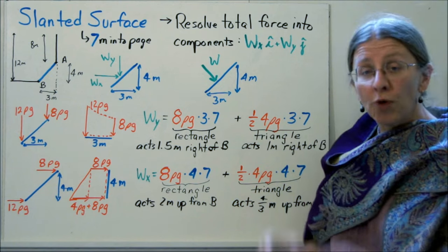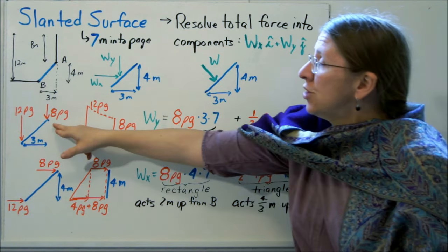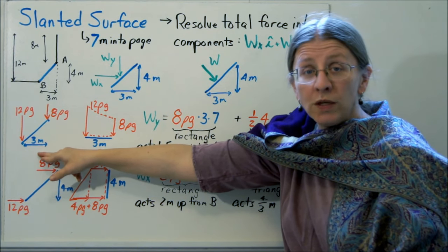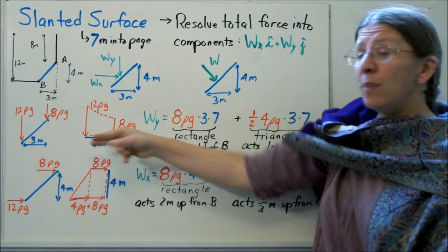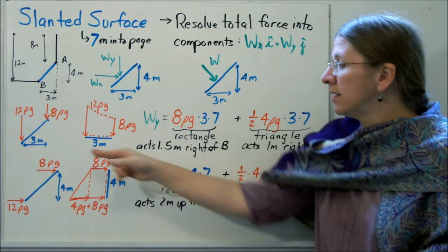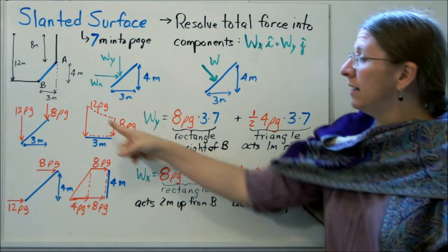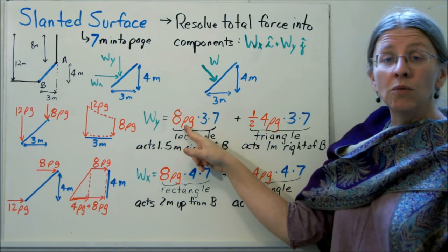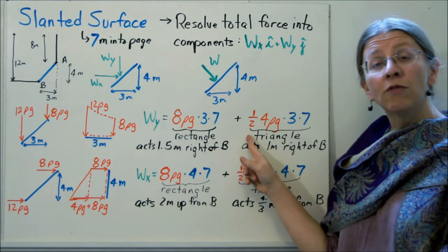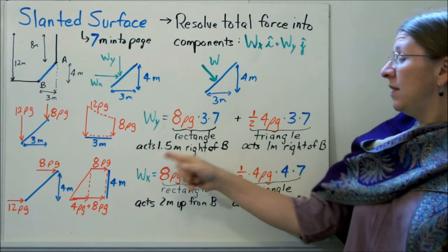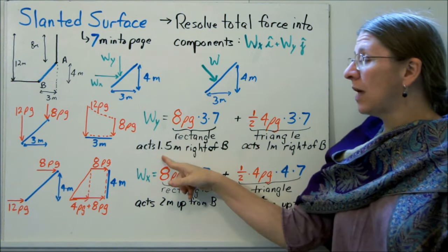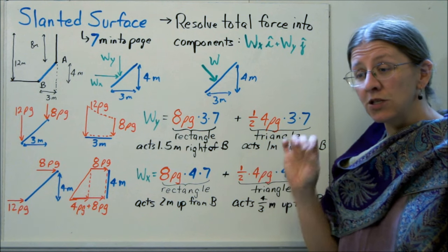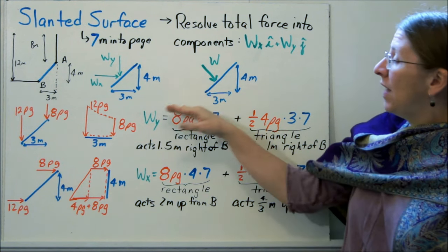Let's look first at the vertical pressure, Wy. The pressure at A, 8 meters down, is 8ρg. The pressure at B, 12 meters down, is 12ρg. So if we took by the principle of transmissibility and slid all those arrows down until they all came down to the bottom, you'd have again a nice rectangle with a triangle on top of it, it's another trapezoid. So Wy can be: the rectangle is 8ρg times 3 times 7, the triangle is 1/2 times 4ρg times 3 times 7. You know where these act. This rectangle will act 1.5 meters to the right of B. This triangle will act 1 meter to the right of B. Because you know where these distributed loads act and how they act. That's the Wy.